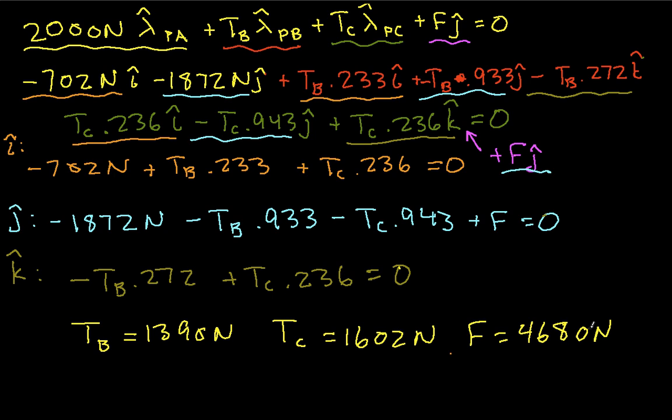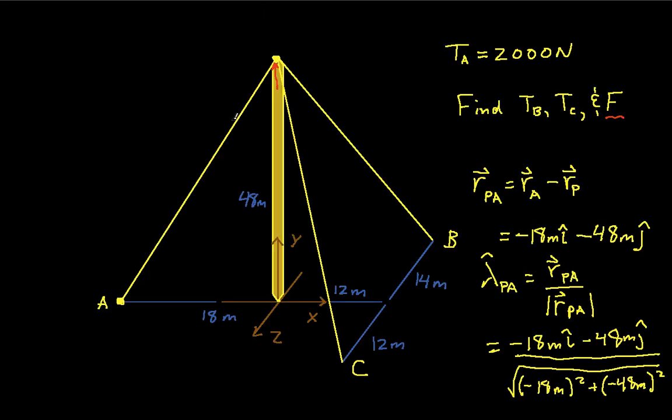So there we are. We basically have finished our example. If we go back to the pictures, we see that TB has a smaller magnitude than TA did. TC also has a smaller magnitude than TA.